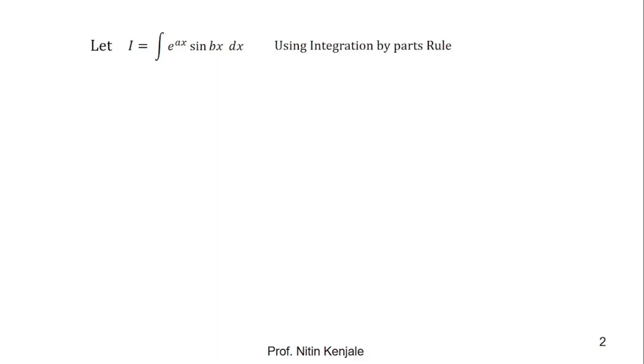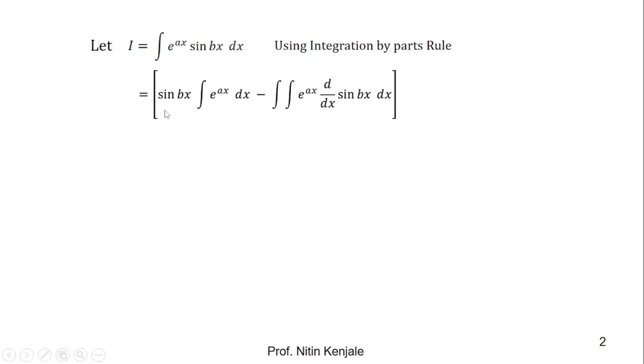First, we consider I is equal to the integration of e raised to ax sin(bx) dx. Now we apply the integration by parts rule to evaluate this integration, considering sin(bx) as u and e raised to ax as v. So by applying the integration by parts rule, we have the integration of e raised to ax sin(bx) dx as sin(bx) into the integration of e raised to ax dx, minus the integration of e raised to ax into the derivative of sin(bx) dx.